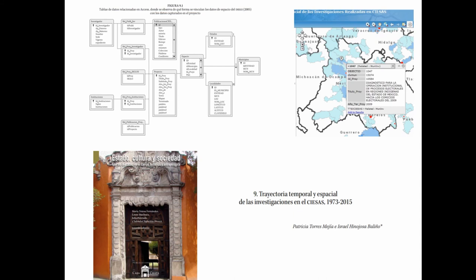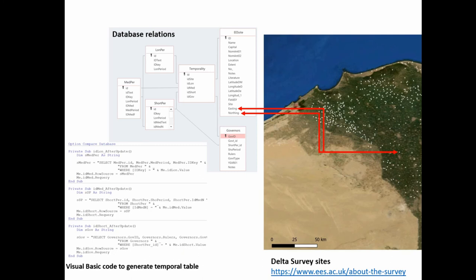What if we consider each archaeological site in Egypt as a project, and instead of a National Geostatistical Framework, we treat the temporality as a set of qualitative variables, linking each site to an n quantity of temporalities, depending on what has been reported on the field? In Egypt, the Delta Survey has mapped more than 700 sites, but just as the project in CIESAS, each archaeological site in Egypt contains relative dating added differently depending on the quality of the data.